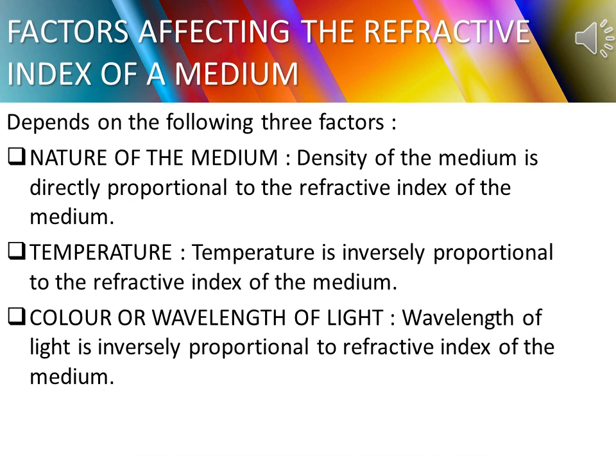Let us look at the factors affecting the refractive index of a medium. There are three factors. The first is the nature of the medium: the less the speed of light in the medium compared to that in air, the more is the refractive index. Or we can say, the more the density of the medium, the more is the refractive index — the two are directly proportional to each other.